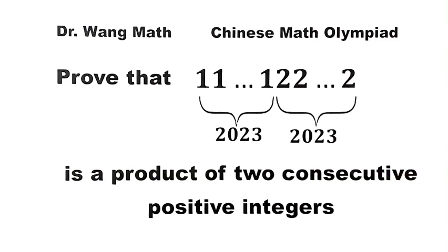In this video, we can solve a question from the Chinese Math Olympiad. Prove that this number, 2023 ones followed by 2023 twos, is a product of two consecutive positive integers.